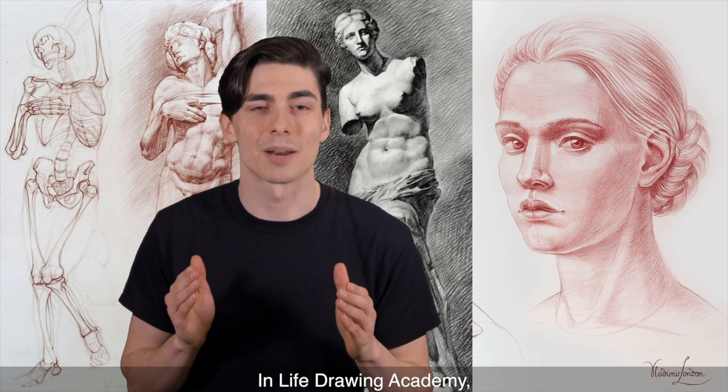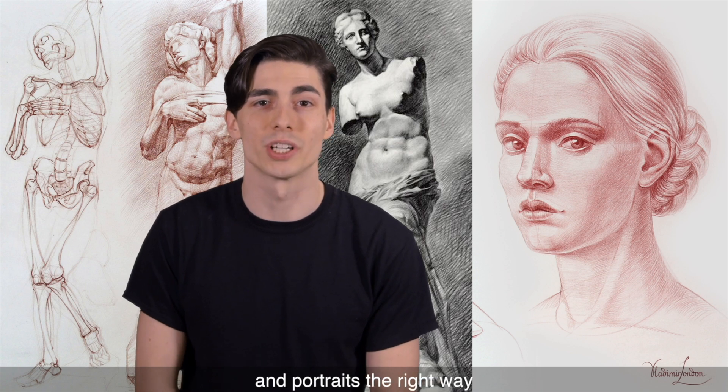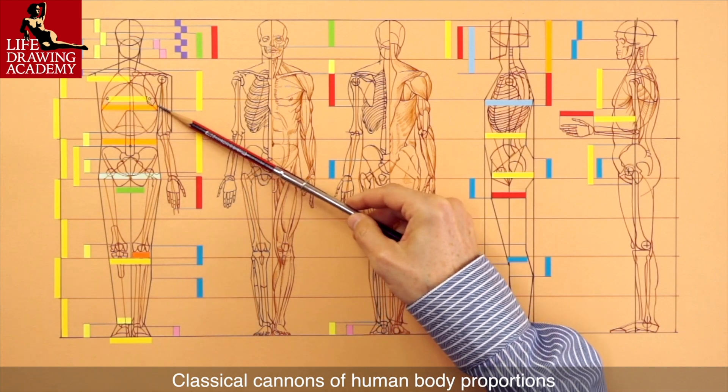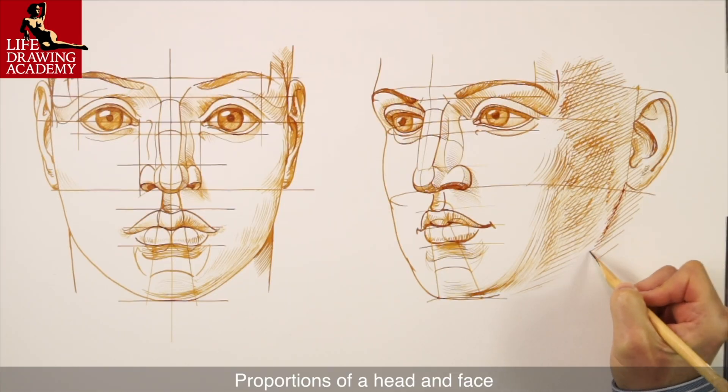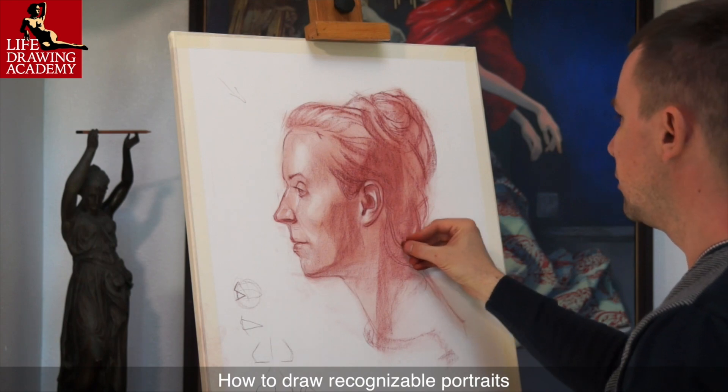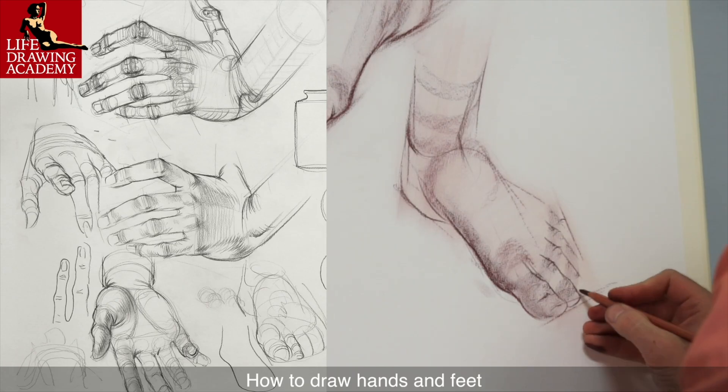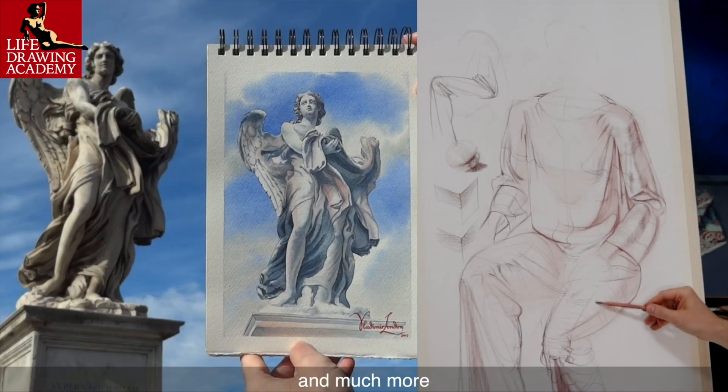In Life Drawing Academy, you will discover all you need to know about how to draw human figures and portraits the right way. You will learn the must-know information, including classical canons of human body proportions, proportions of a head and face, how to draw recognizable portraits, how to draw male and female figures, how to draw hands and feet, as well as how to draw draperies and clothed figures, and much more.